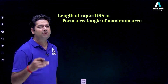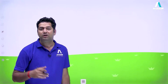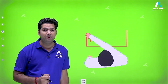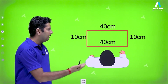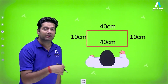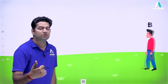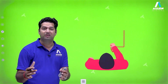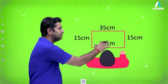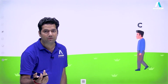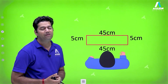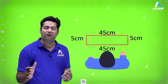This task is allotted to three persons. The first one comes and forms a rectangle with dimensions 40 and 10 — length is equal to 40 and breadth is equal to 10. The second comes and forms a rectangle with dimensions 35 and 15 centimeters. Then the third one comes and forms a rectangle with dimensions 45 and 5 centimeters respectively.